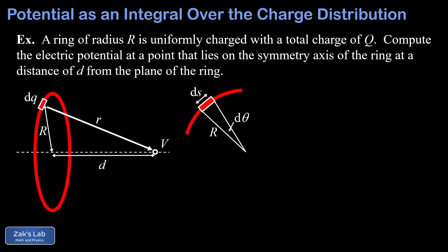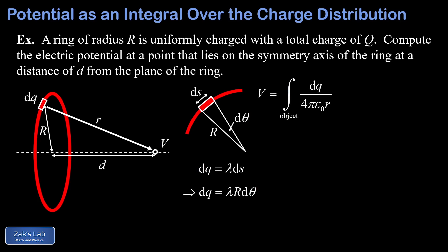Zooming in on dq, we see it as an infinitesimal arc on the ring with length ds. The charge dq is given by the linear charge density λ — charge per unit length — multiplied by ds. Since the infinitesimal arc ds equals R·dθ, this is just the infinitesimal form of s = Rθ. So dq = λR·dθ, where λ is the linear charge density measured in coulombs per meter.